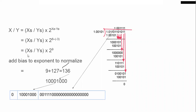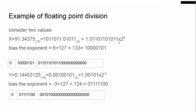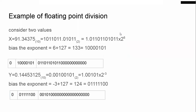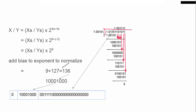Now we find XS divided by YS. We substitute the significant bit values for X and Y. This is the dividend and this is the divisor — the divisor is placed here and the dividend here. We check how many bits are in the divisor: 6 bits. So we take 6 bits from the dividend and check whether the dividend portion is greater than the divisor. If greater, we can divide.